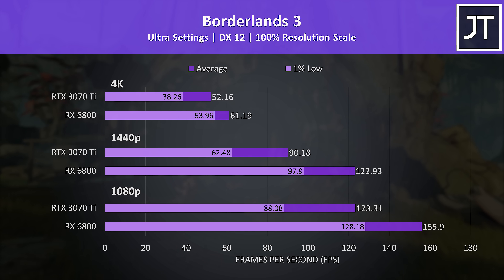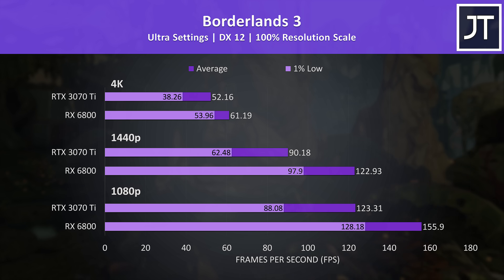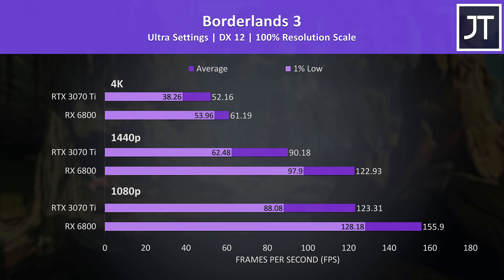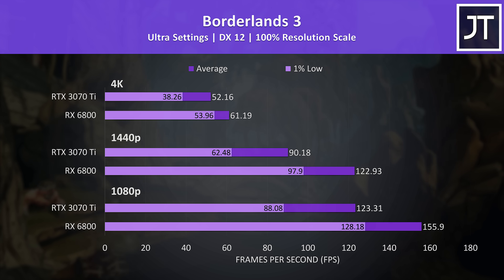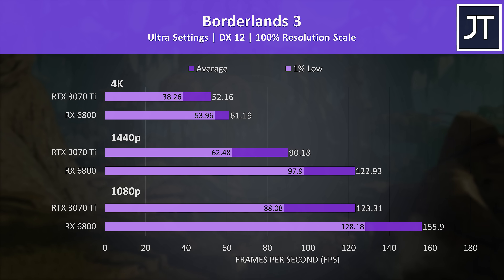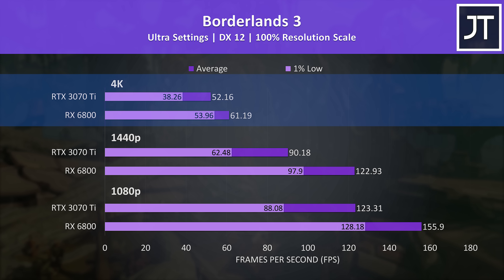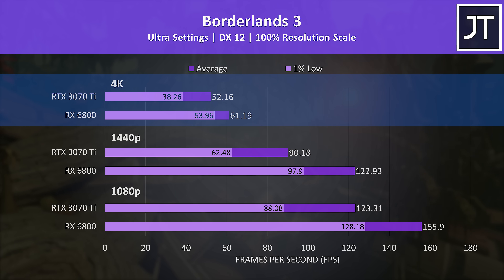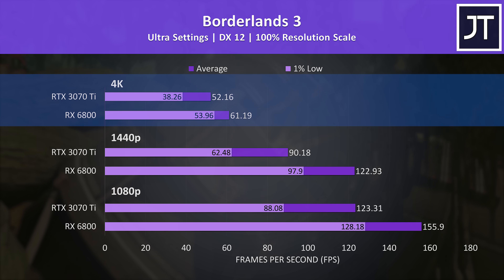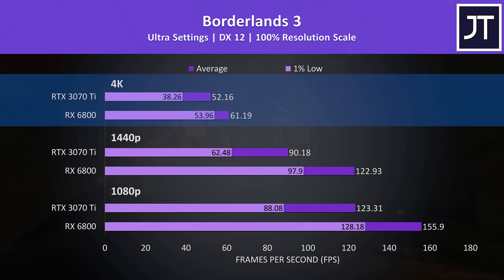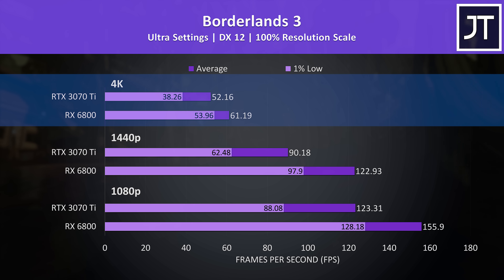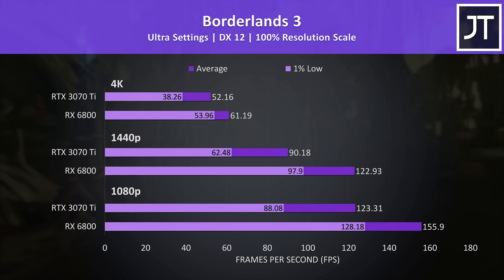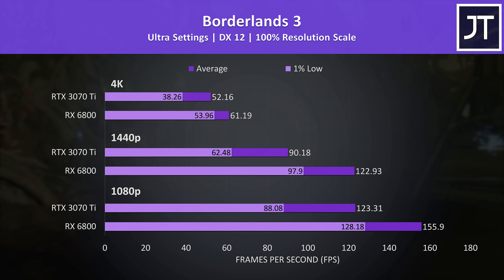Borderlands 3 was tested with the game's benchmark, and this is another title that tends to favor Radeon graphics. Above 60 FPS was possible at 4K, putting the 6800 17% ahead of the 3070 Ti — the biggest difference at this resolution out of all 17 titles tested. Even the 1% lows from the 6800 were beating the average frame rates from the 3070 Ti regardless of resolution.